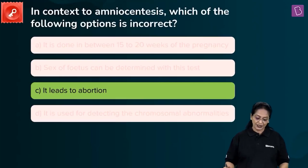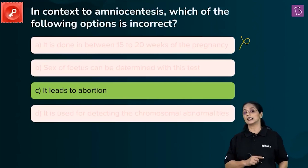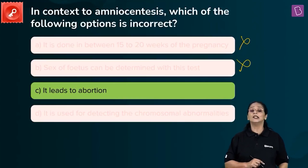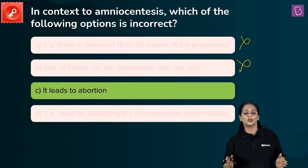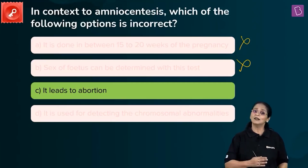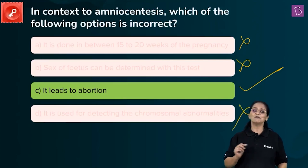The right answer to this question — in context to amniocentesis, which option is incorrect? Option A, done between 15 to 20 weeks of pregnancy, is correct. Option B, sex of fetus can be determined with this test — yes, along with genetic abnormalities this test is also used to detect the sex of the developing fetus, so that is also correct. Option C, it leads to abortion — no, amniocentesis does not lead to abortion. There is a small risk of miscarriage, but performing amniocentesis does not mean the pregnant woman will abort. This is the incorrect statement, so C is the right answer. Option D, used for detecting chromosomal abnormalities, is also correct.